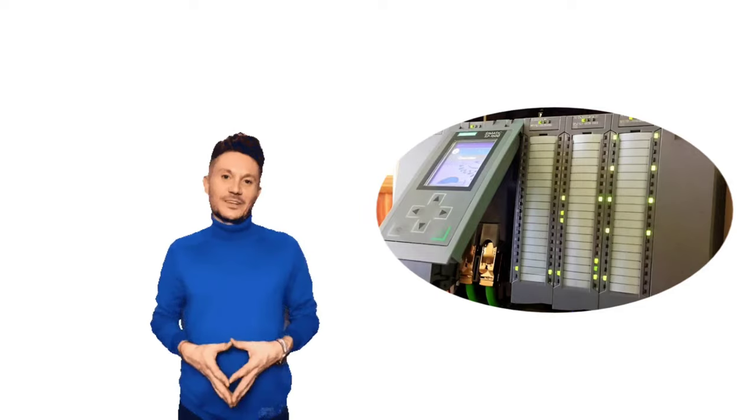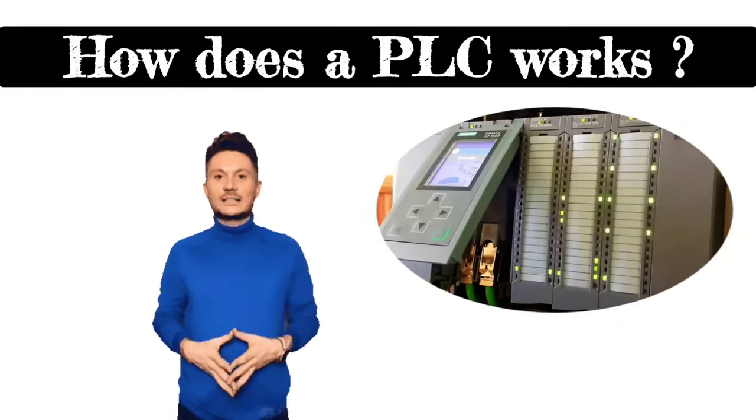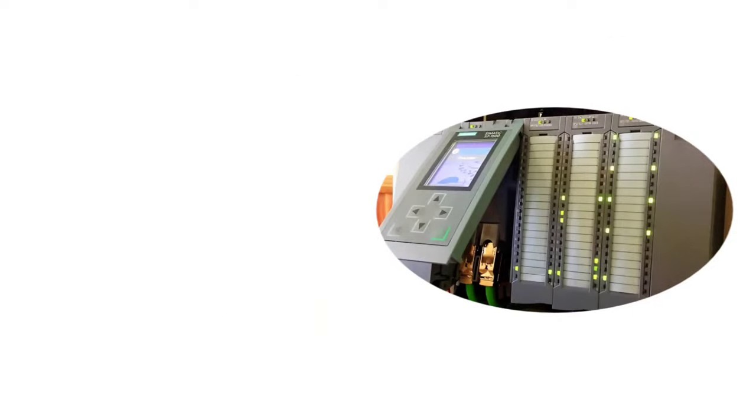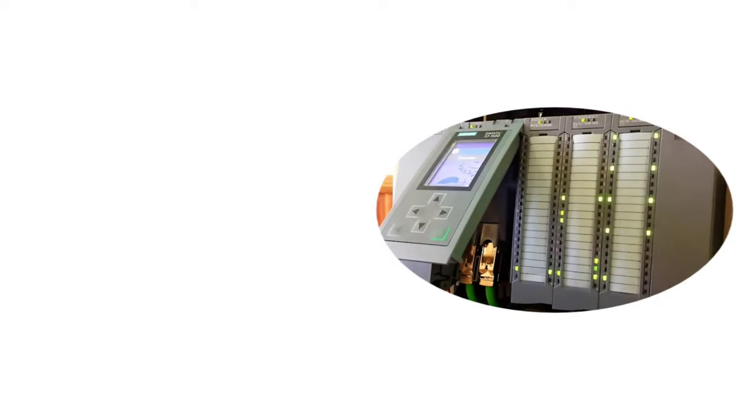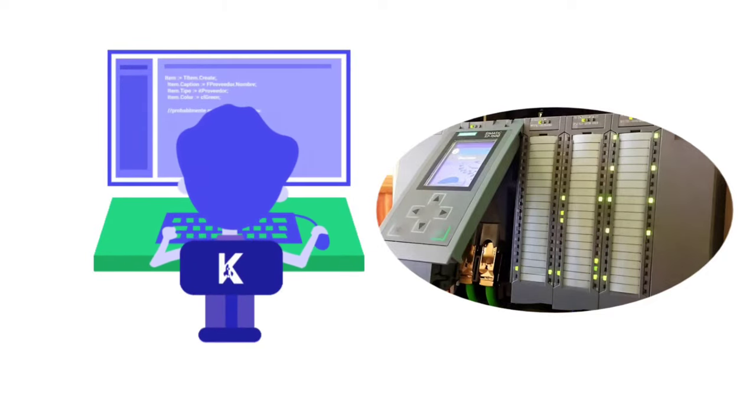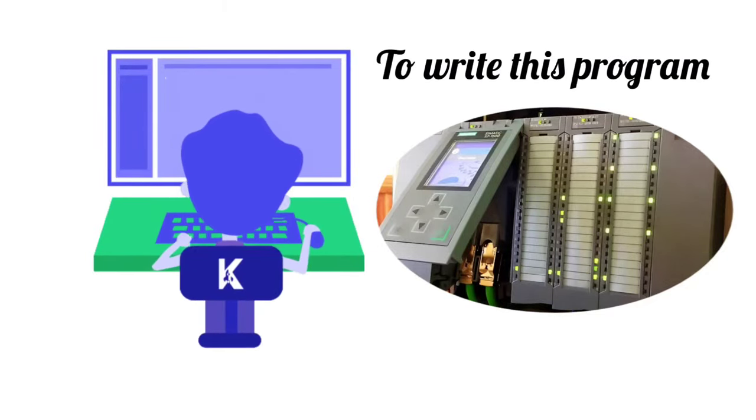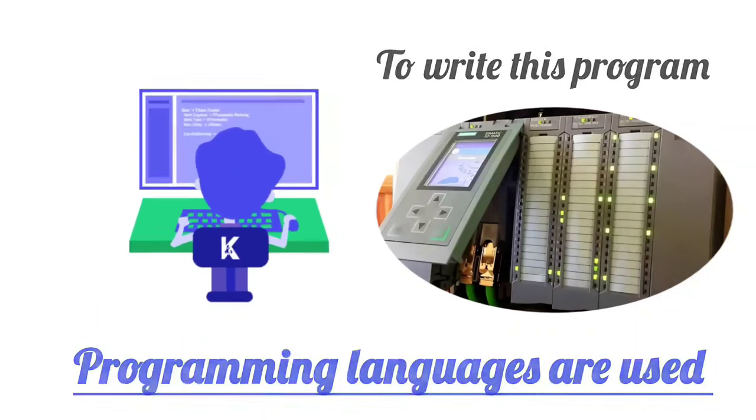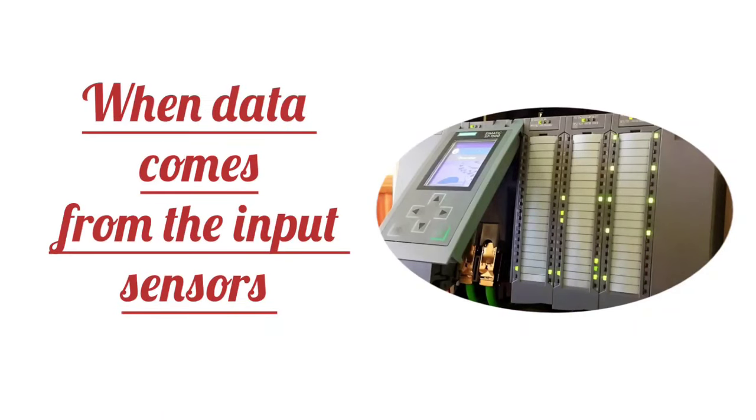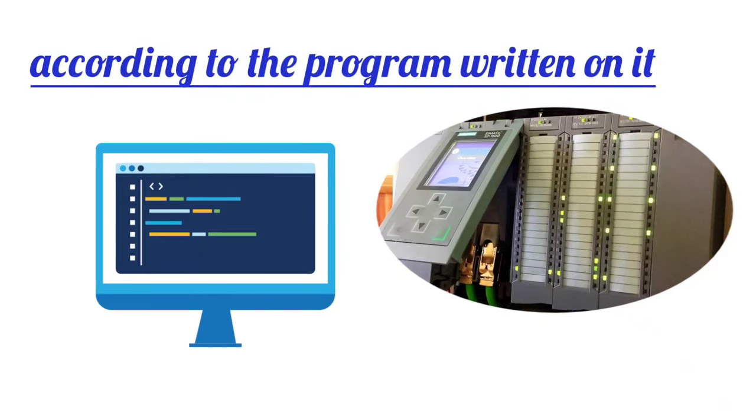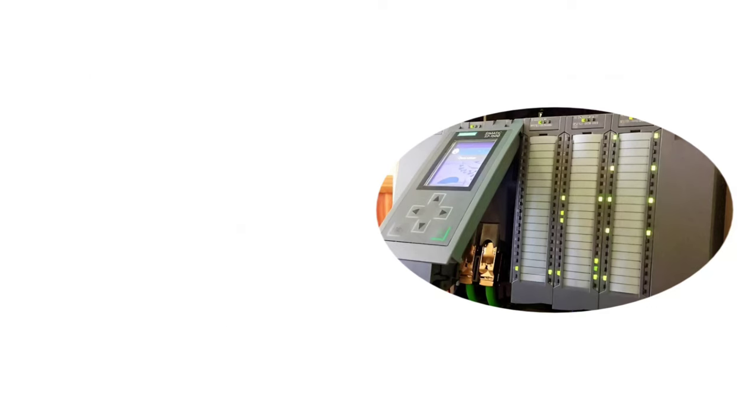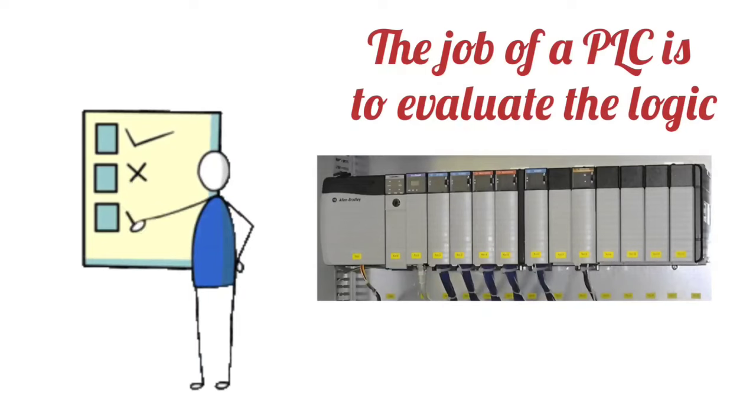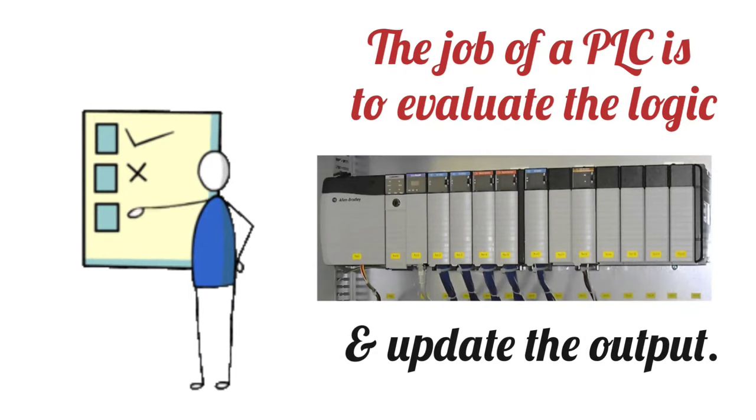To understand PLC, let us understand how PLC works. There is a special program inside the PLC, which we write in the form of logics. Programming languages are used to write this program. When data comes from the input sensors, according to the program written on it, the PLC controls the output devices. The job of a PLC is to evaluate the logic and update the output.